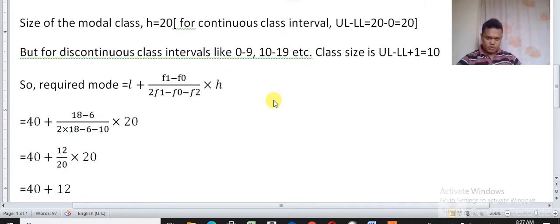Now we have to find class size. Our classes have size 20. If the classes are continuous then you simply do upper limit minus lower limit. So 20 minus 0 is 20. All the classes have the same class size.